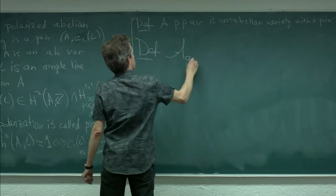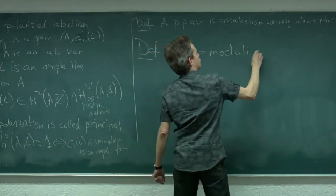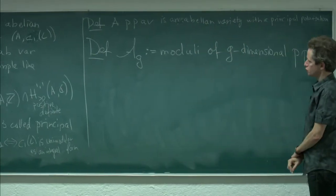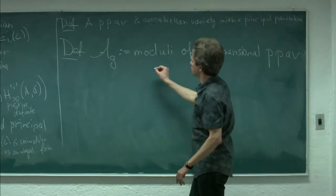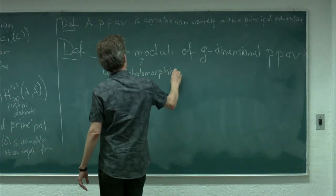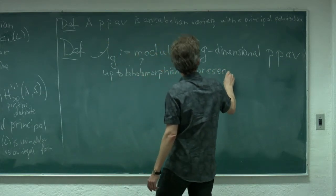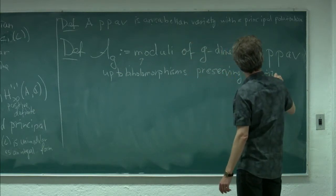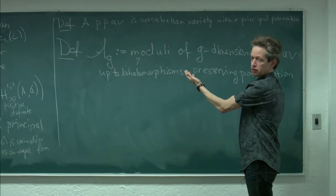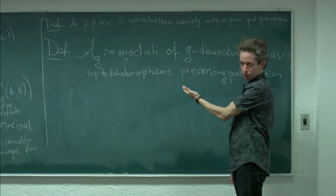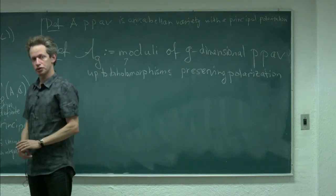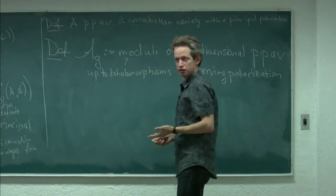Let A_g be the moduli of g-dimensional PPAVs. When I say moduli, I mean up to biholomorphisms preserving polarization. It's a set at this moment — I have to convince you it's better than a set. When I say moduli, this is a set of isomorphism classes. You have no right a priori to believe it has any good structure. The fact that it does is again a minor miracle.